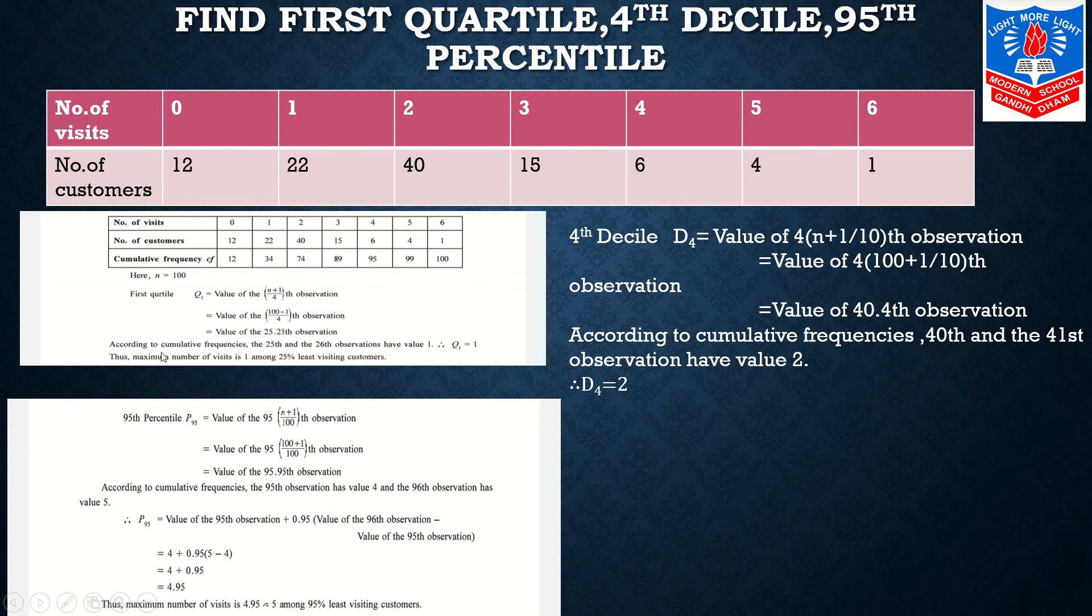It is written: according to cumulative frequencies, the 25th and 26th observations have value 1, so therefore Q1 equals to 1.